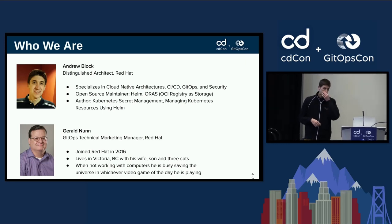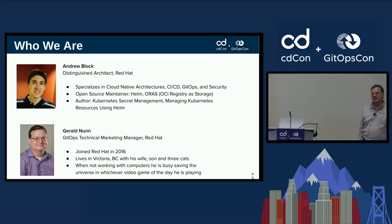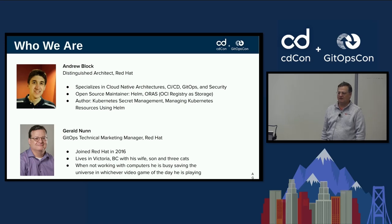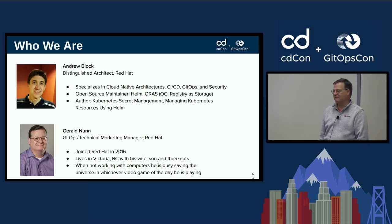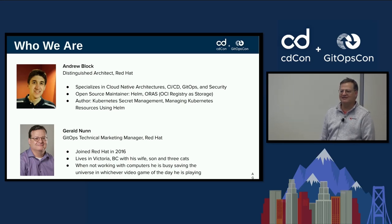My name is Gerald Nunn. I am the OpenShift GitOps technical marketing manager for Red Hat. I've been with Red Hat since 2016. Before my new role, which I started in January, I was a solution architect for many years. I live not too far from here, near Victoria, British Columbia, with my wife, son, and three very slightly annoying cats.